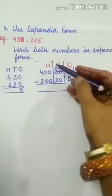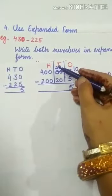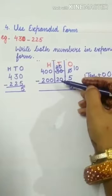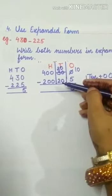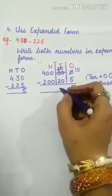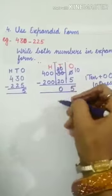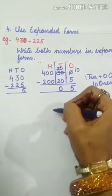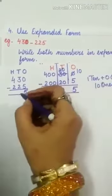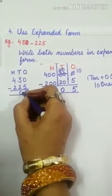Now at the tens place, the numbers are 20 and 20. If we subtract the same number, every time when we subtract the same number, we get the answer 0. So how many tens? 0. Write down 0 at the tens place here.